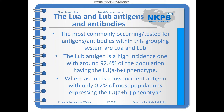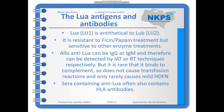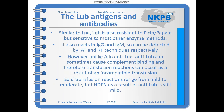Because LUB is a high incidence antigen, the majority of the population will not be able to create allo-anti-LUB. However, if a patient does have anti-LUB, there is a chance of a transfusion reaction if they are transfused with red cells carrying the LUB antigen. Because so much of the population has the LUB antigen, it can be very hard to find compatible blood for these patients.